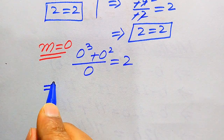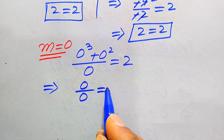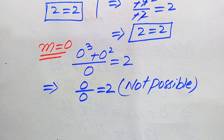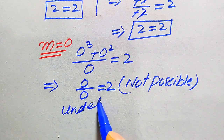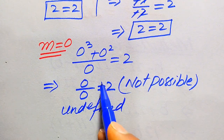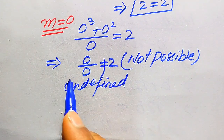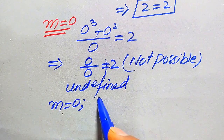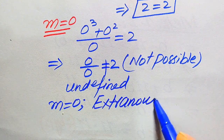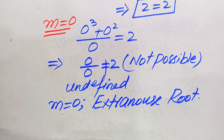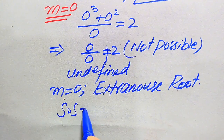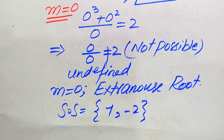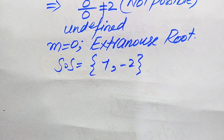Now we verify m = 0: substituting gives (0³ + 0²) / 0 = 0/0, which is indeterminate — the left hand side is undefined. Since both sides are not equal, m = 0 does not satisfy the given equation. Therefore m = 0 is an extraneous root. The solution set of this problem is m = 1 and m = −2.